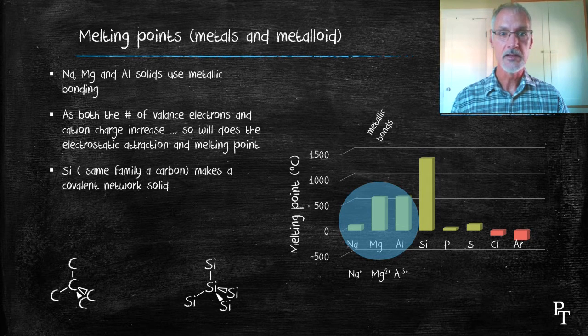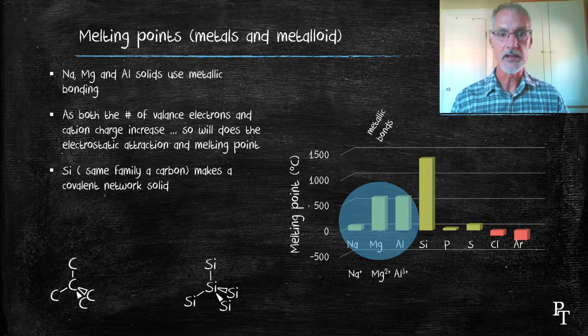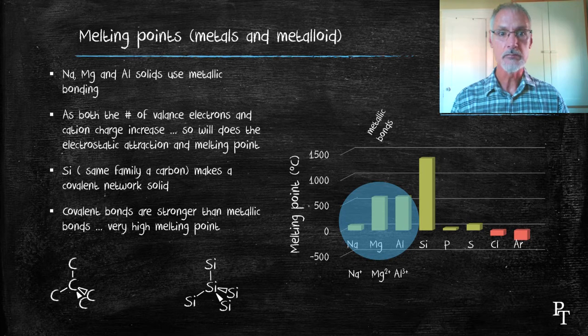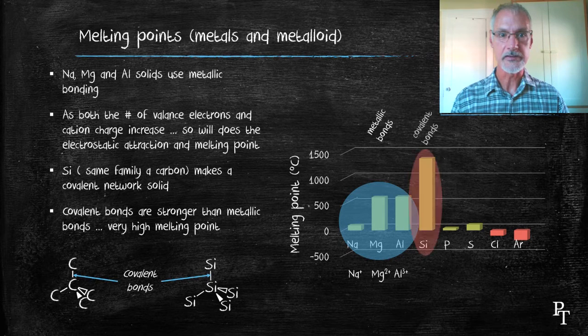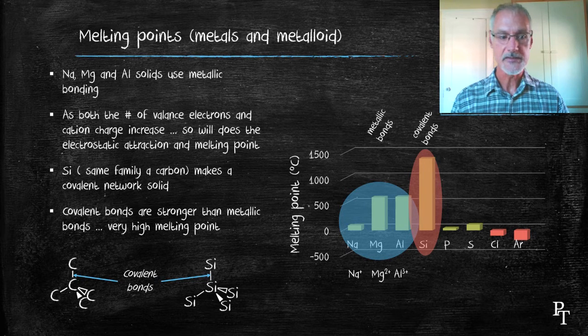You might recall carbon makes, in a diamond arrangement at least, a giant network covalent solid. Silicon will do much the same thing, with covalent bonds located at all of the locations. This causes the giant increase that we see in the melting points.